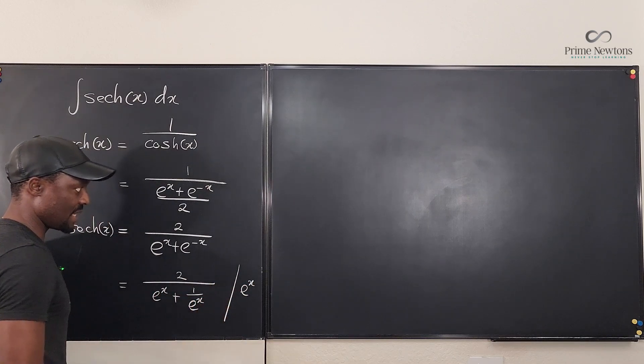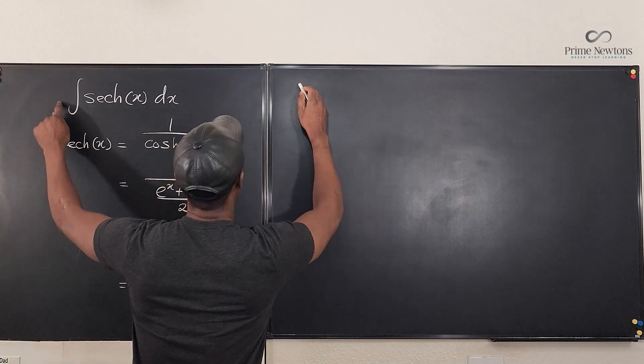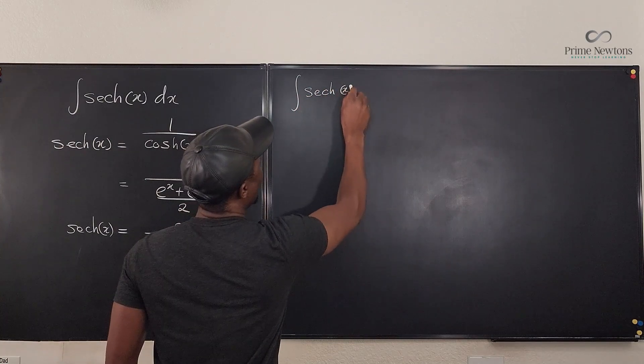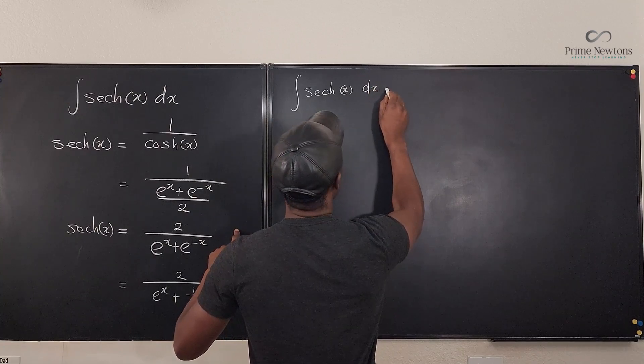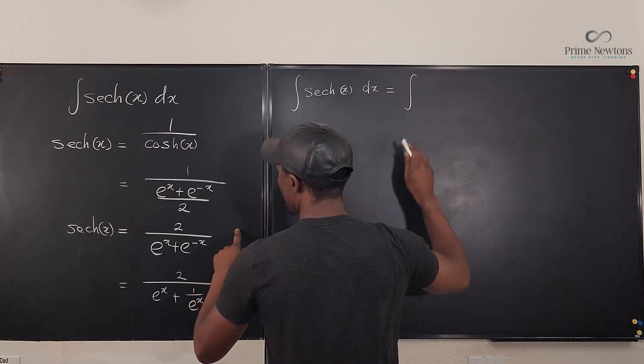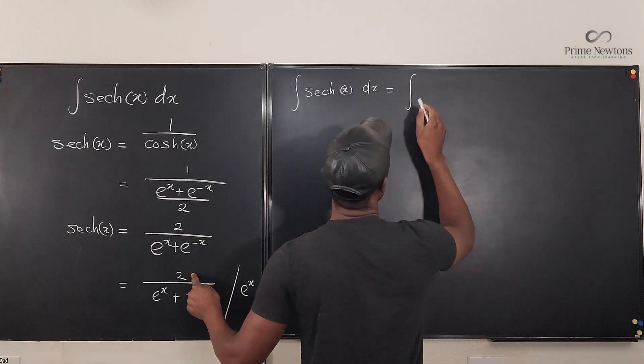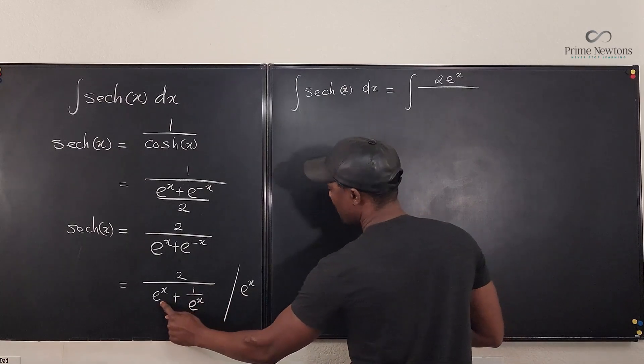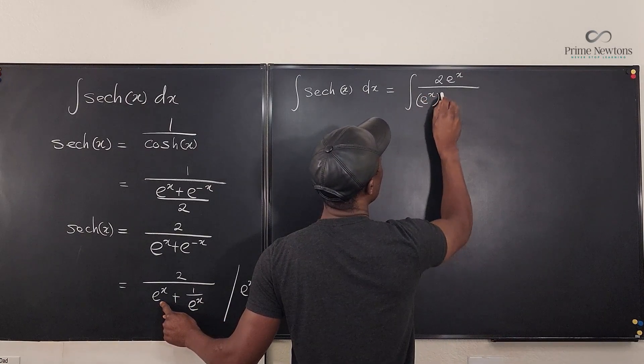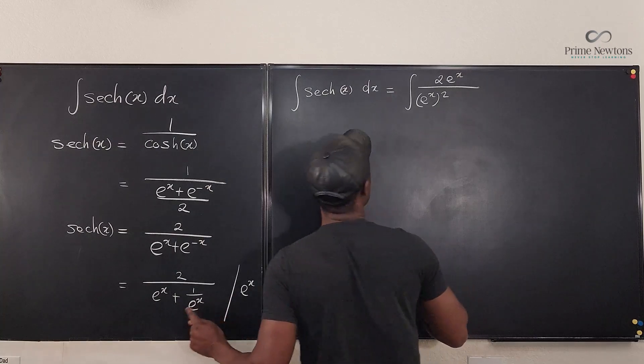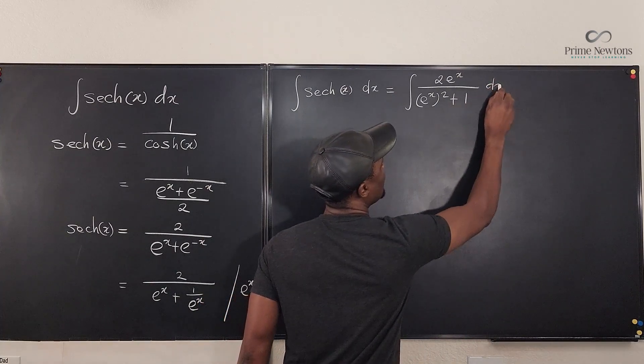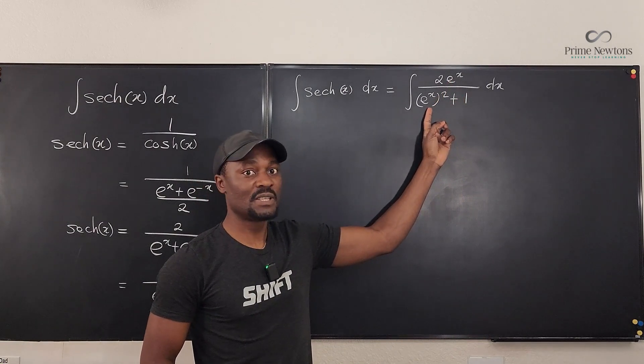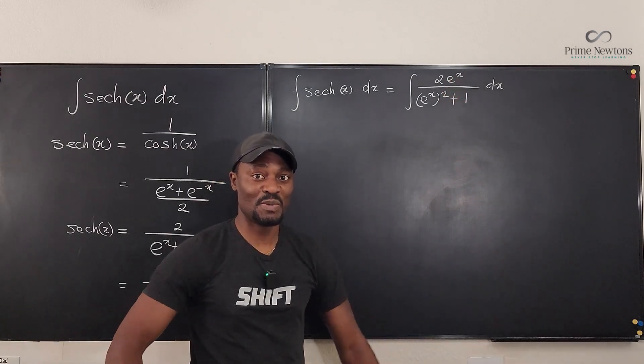So if I multiply the top by e to the x, I'm going to get - so I can say that the integral hyperbolic secant x dx is equal to the integral of, watch this, this is going to be 2 e to the x over - this multiplied by this gives me e to the x squared, and this multiplied by this gives me 1. So clearly what I have here is also here, and I know the derivative of e to the x is still going to show up in front. I just use my u-substitution.